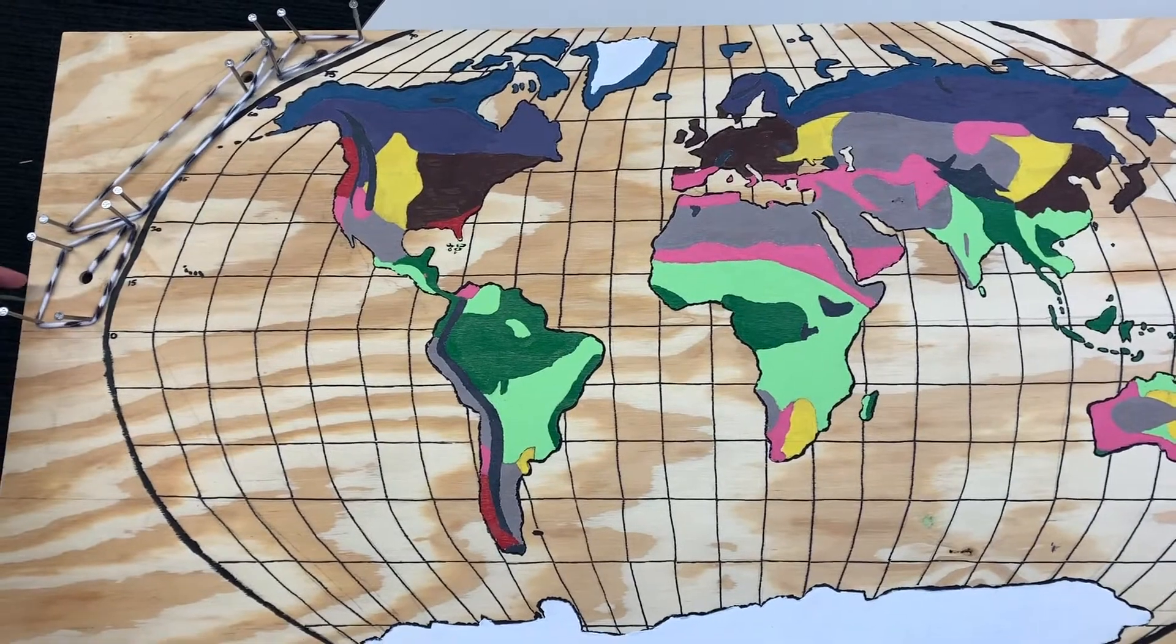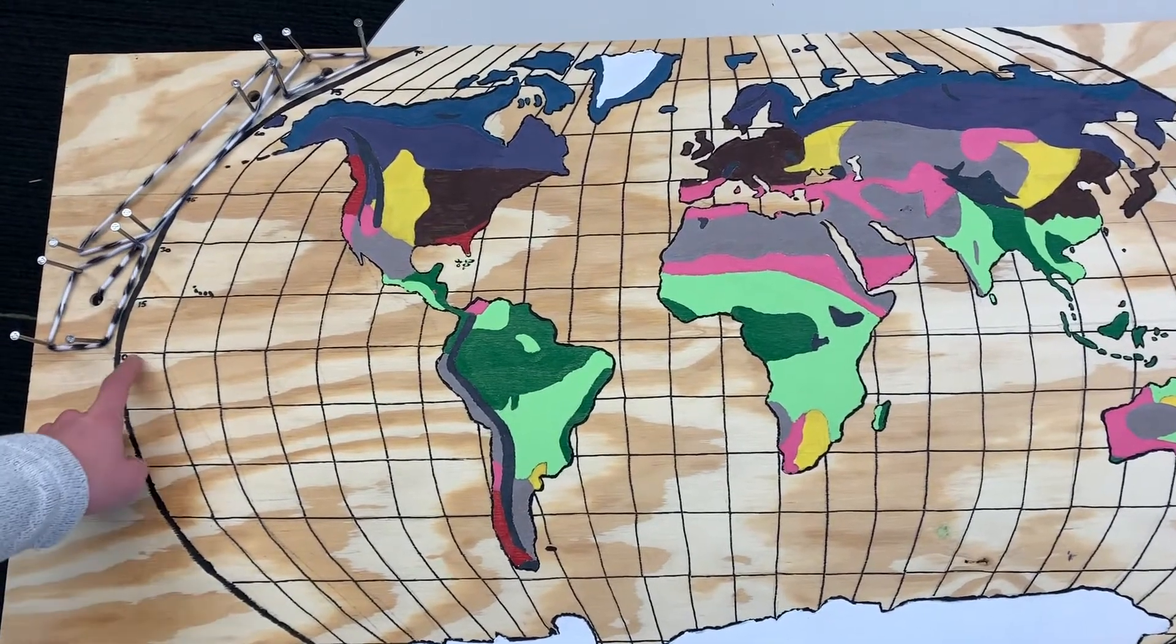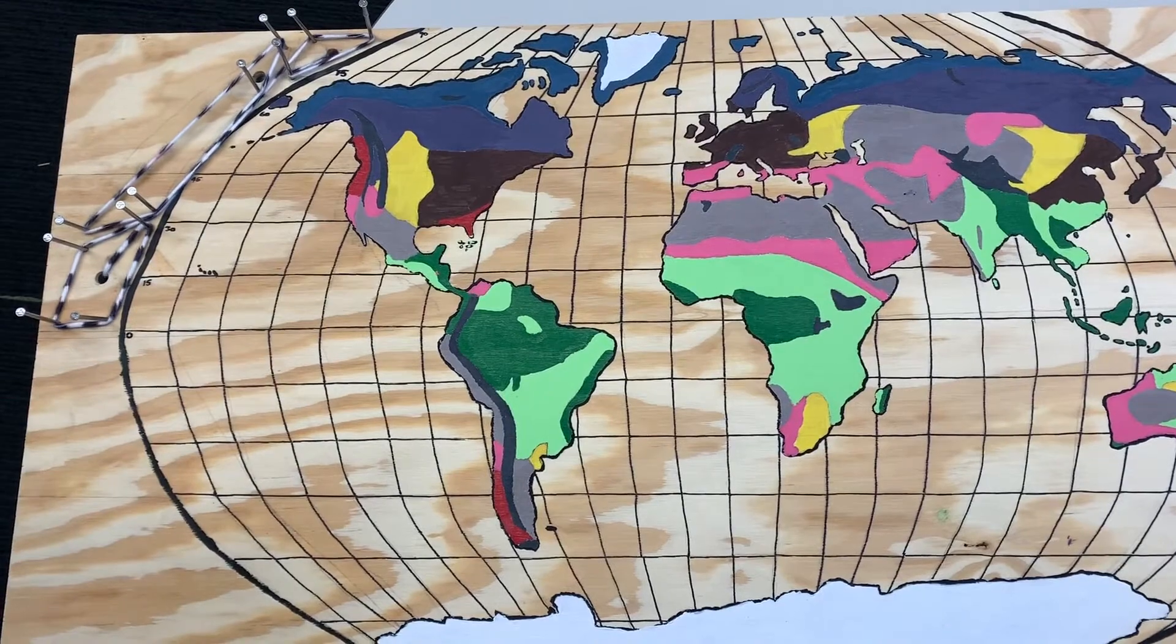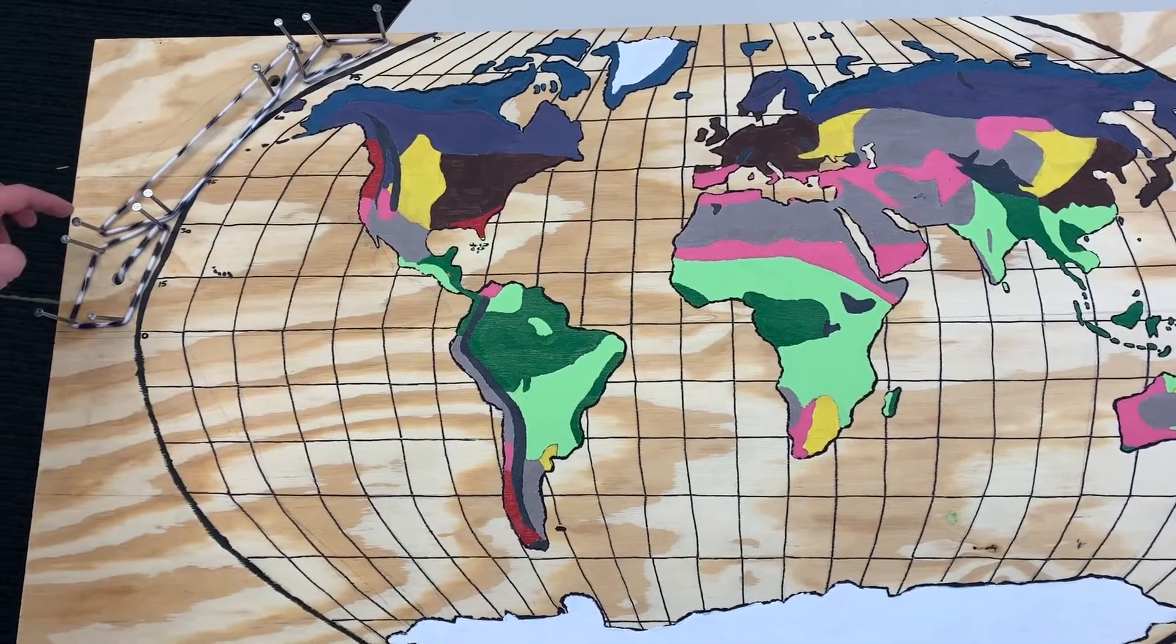This first cell, the Hadley cell, it allows low pressure to rise up in the equator and drop tons of rain.